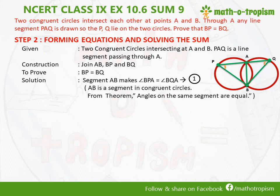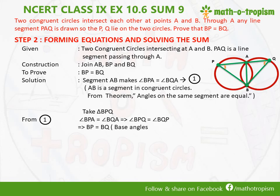Taking triangle BPQ, from equation 1 we get that angle BPA is equal to angle BQA, which is nothing but angle BPQ equal to angle BQP. As a result, BP will be equal to BQ because in that triangle, base angles are equal and sides opposite to equal angles are always equal, which means that triangle is an isosceles triangle.